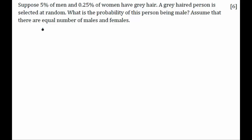So first of all we say that let event M be the case where a male is selected. This is what we are interested in. Let event F be where a female is selected. And let G be the event which is happening where a person with grey hair is selected.